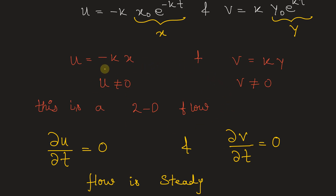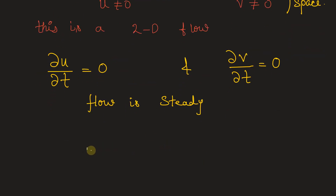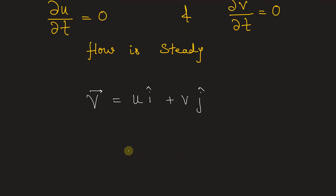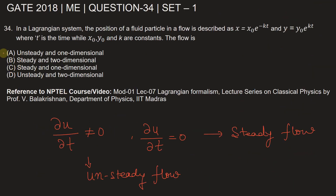We observe that velocity in x and y directions is only a function of position, or space. The final velocity vector can be written as V = u i-hat + v j-hat, which equals minus kx i-hat plus ky j-hat. The flow is therefore steady and two-dimensional, making option B the correct choice. For more detail, refer to the NPTEL course lecture seven on Lagrangian Formalism in classical physics by Professor V. Balakrishnan of IIT Madras.